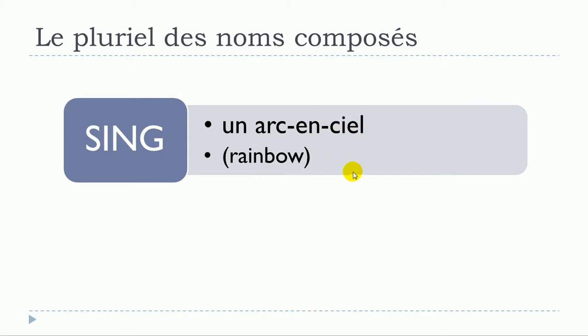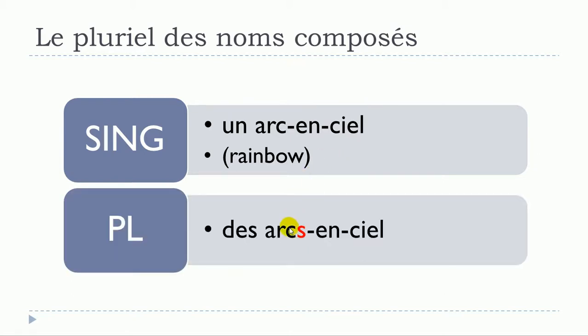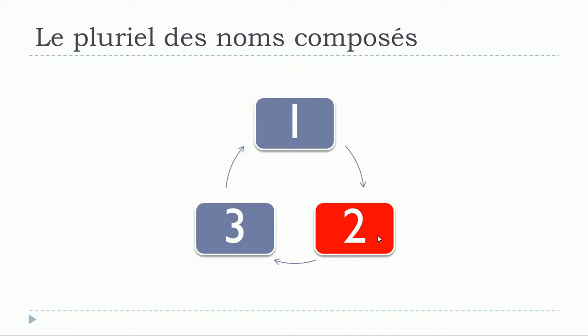So if we respect the rule that we saw previously, it's only the first part here, so le nom arc, that will take the mark of the plural, and then it will be s. So you will have un arc-en-ciel and then the plural form des arcs-en-ciel. You can see that as usual we don't really pronounce this final s, so phonetically it's almost the same, but then we've got this liaison between the two: des arcs-en-ciel.